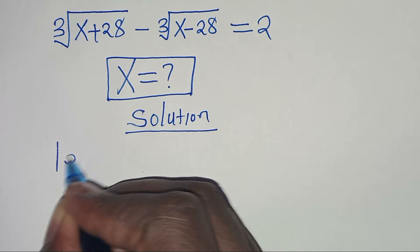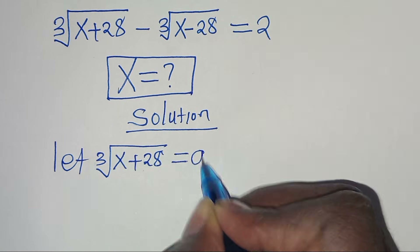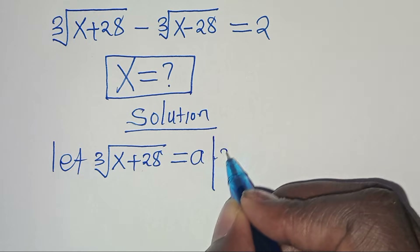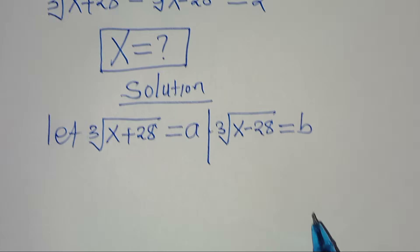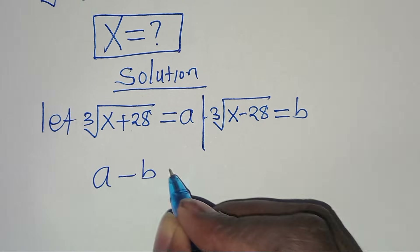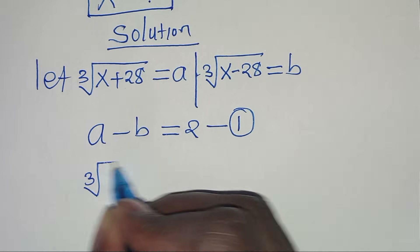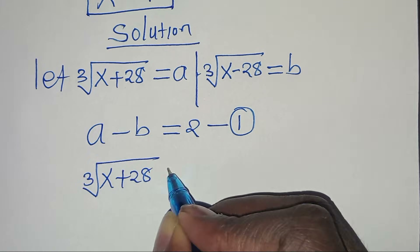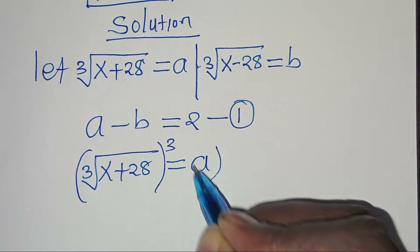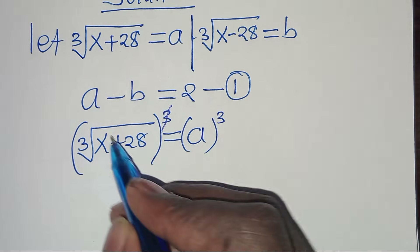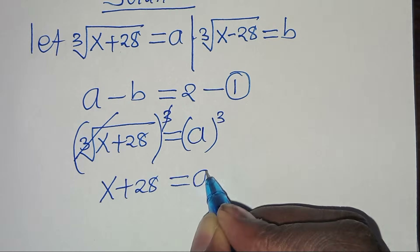The first step is to let the cube root of x plus 28 be equal to a, and the cube root of x minus 28 be equal to b. This implies that a minus b equals 2 — let's call this equation 1. To eliminate the cube root sign, we raise both sides to the power of 3, giving us x plus 28 equals a cubed.